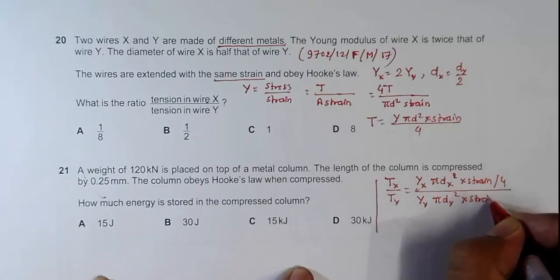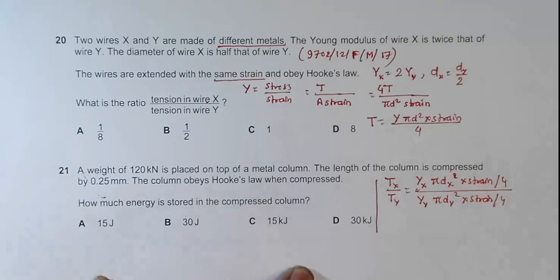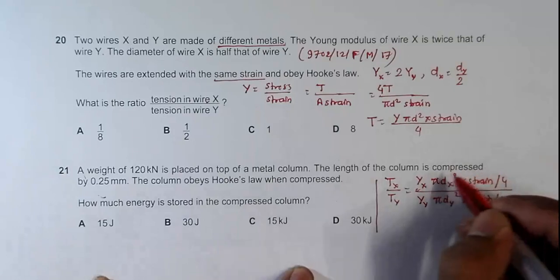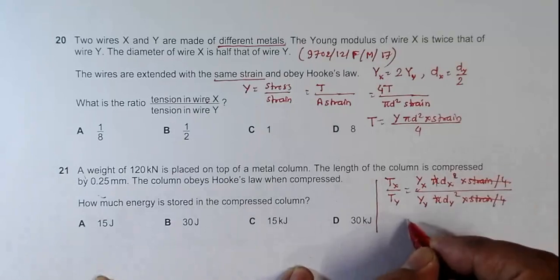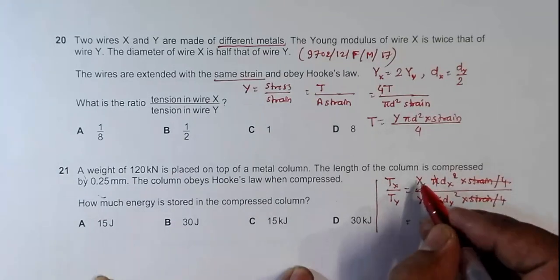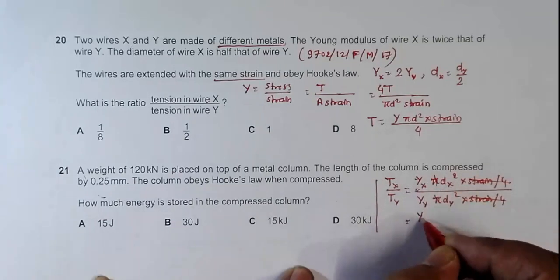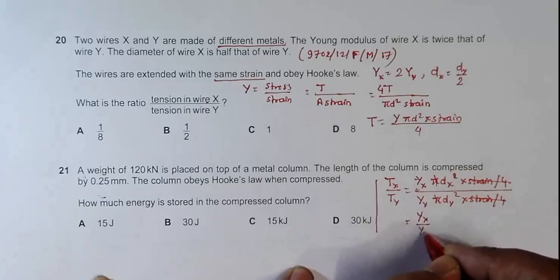We have several canceling quantities. Pi and pi cancel, strain and strain cancel, 4 and 4 cancel. What remains is Yx over Yy times Dx squared over Dy squared.